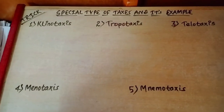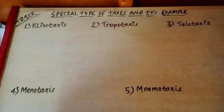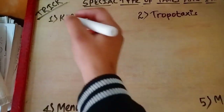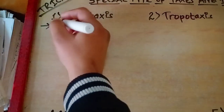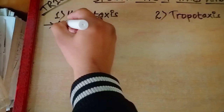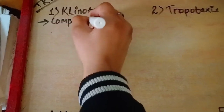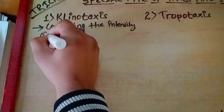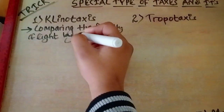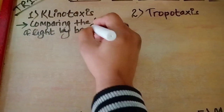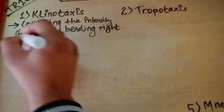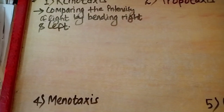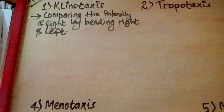First we have klinotaxis. In klinotaxis, it is comparing the intensity of light by bending right and left. That is, any animal compares the intensity of two light sources by continuously bending its head to the right and left.